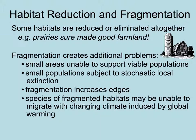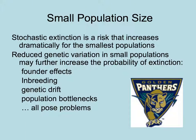Species in fragmented habitats may not be able to move, especially with changing climate induced by global warming exacerbating their problems. Small population size negatively affects most persisting populations. Not only is stochastic extinction a risk, but reduced genetic variation can increase the probability of extinction. Recessive lethals or detrimental alleles are expressed more abundantly. Founder effects may cause only a few alleles of any particular gene to be available, and inbreeding and genetic drift can cause small populations to become more and more inbred.